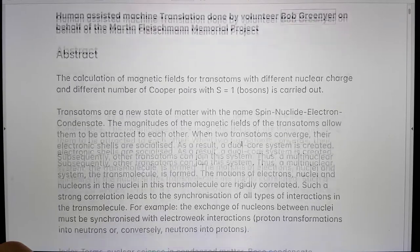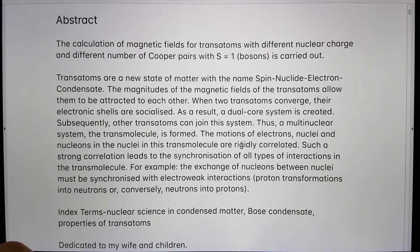I'll start off by reading the abstract. So, the calculation of magnetic fields for transatoms with different nuclear charge and different numbers of Cooper pairs with S equals 1, i.e. bosons, is carried out.